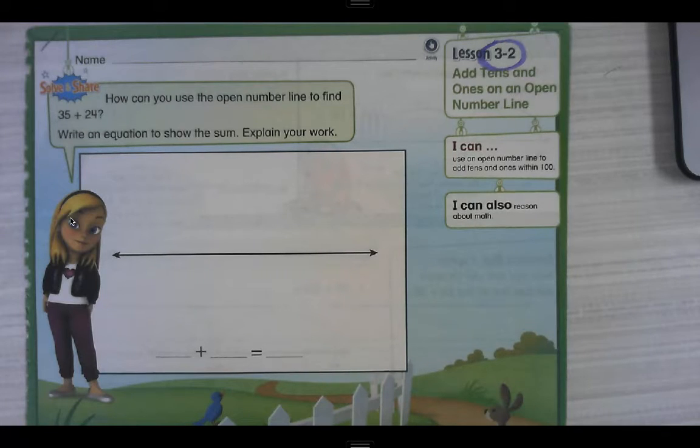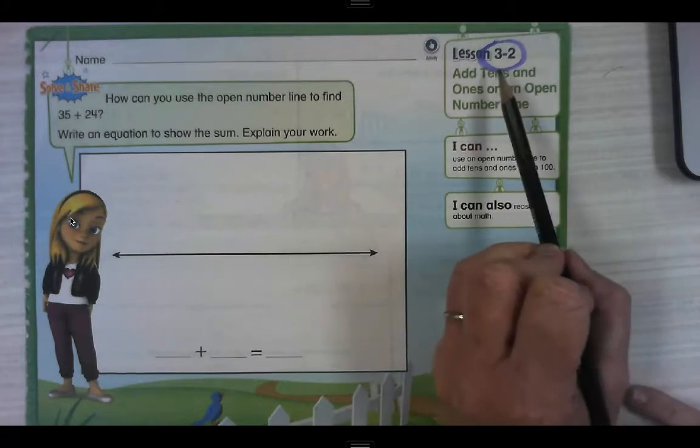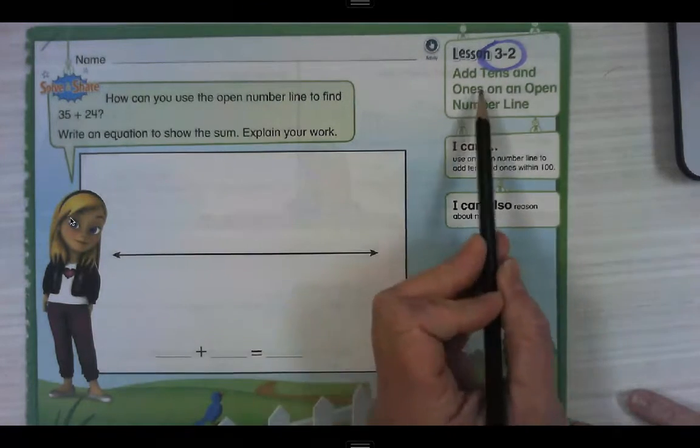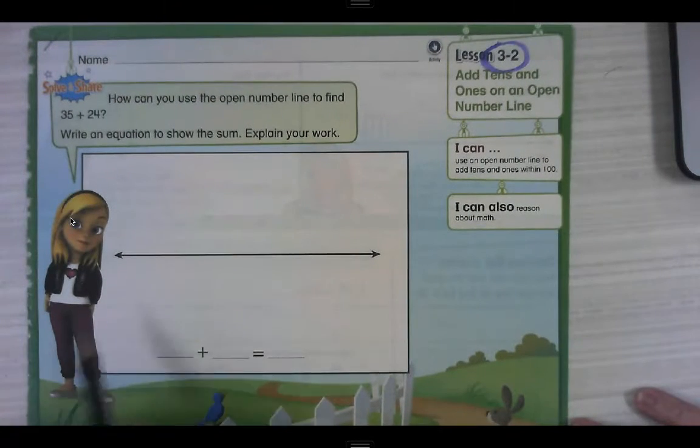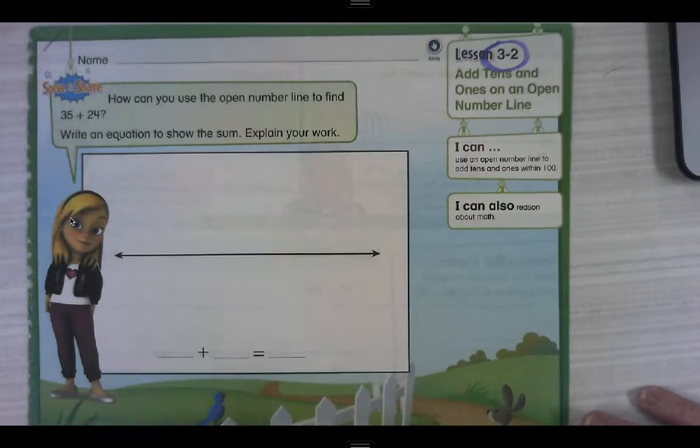Hi everybody, this is Ms. Hamilton. I am going to work through this math lesson with you. We're in the chapter, topic three, lesson two. We're going to work on adding tens and ones on an open number line.